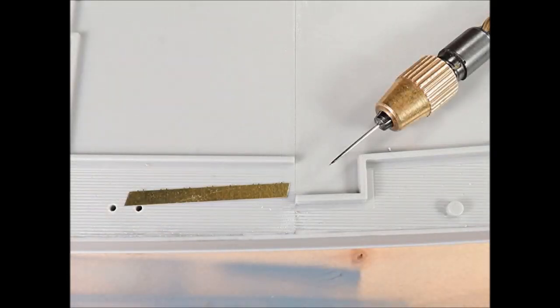A sewing needle held in a twist drill was used to re-scribe the deck detail and a length of scrap photo etch was used as a guide for the needle scraper. The deck detail has now been restored. A 0000 fine grit steel wool pad was lightly rubbed over the scribed area to remove any plastic burrs.